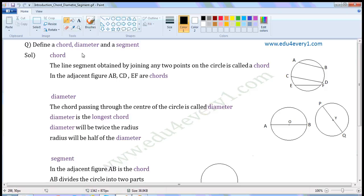Define a chord, diameter and a segment. Chord. The line segment obtained by joining any two points on the circle is called a chord.